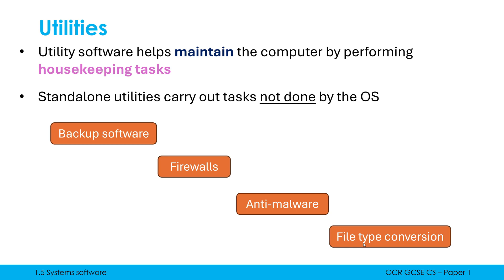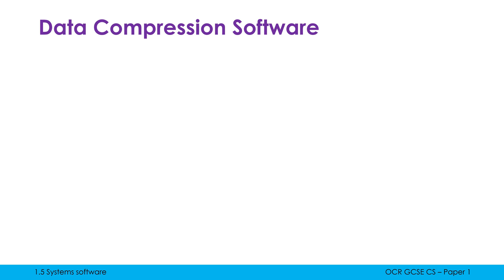There are three utilities listed by OCR under this topic, but be aware there are lots more examples beyond those three. The first example is data compression software. Compression tries to reduce the file size of a file so that we can store more files on our storage, and also so that we can transfer files more quickly over a network.